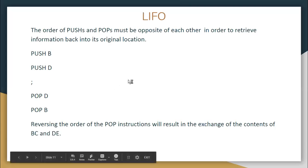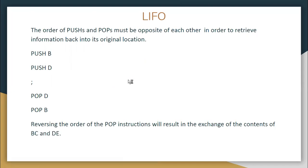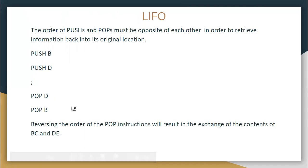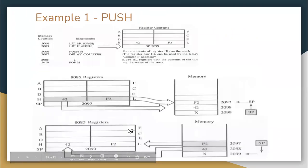The stack works using LIFO — last in, first out. Because of this, you must pop data in the reverse order of how it was pushed. If you push B then push D, you must pop D then pop B. If you reverse the order — say pop B first and then pop D — the DE pair's data will be placed in BC and the BC data will be placed in DE, effectively swapping the register contents.